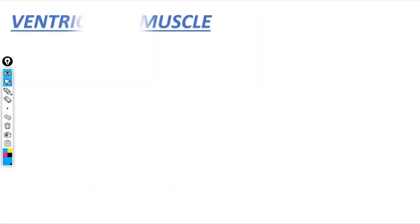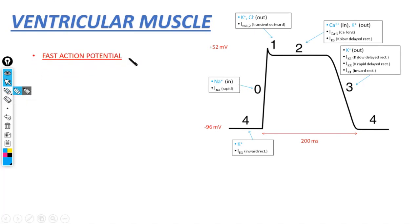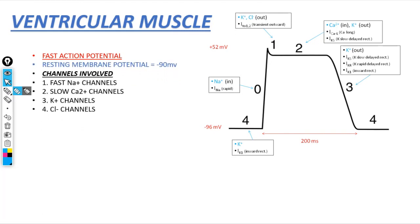Let's see about Ventricular Muscle Action Potential. Here is the diagram. It is also known as Fast Action Potential. The resting membrane potential of ventricular muscle is –90mV. Four channels are involved: fast sodium channels, slow calcium channels, potassium channels, and chloride channels.